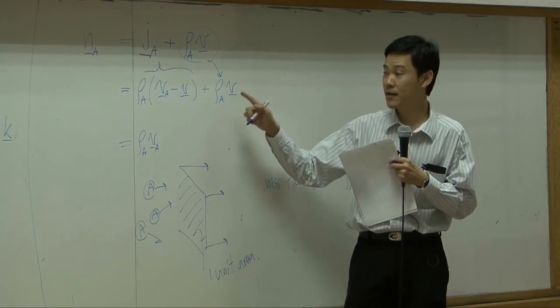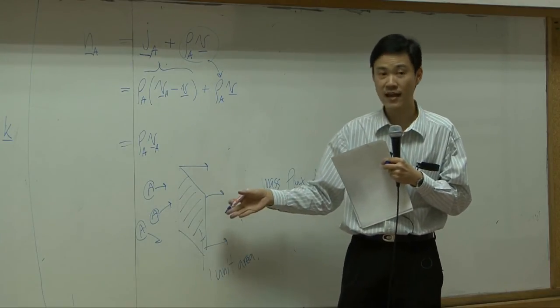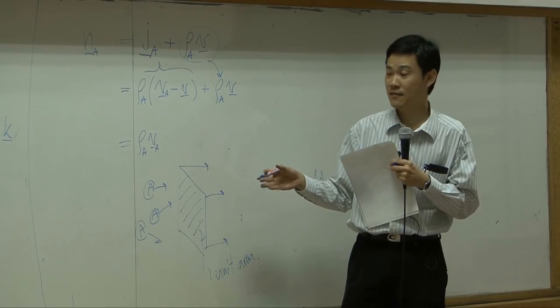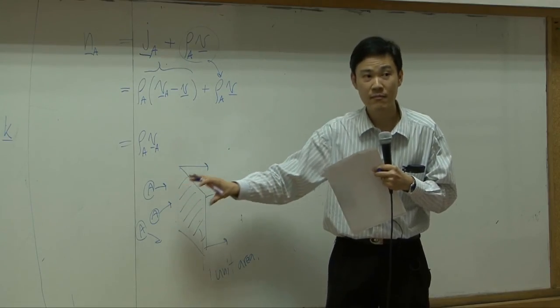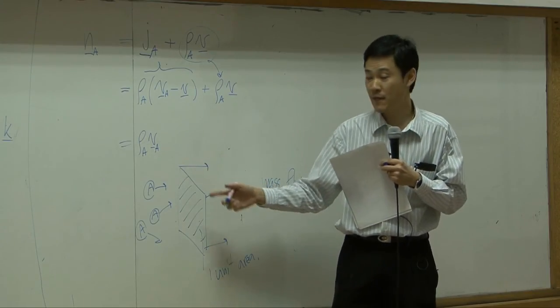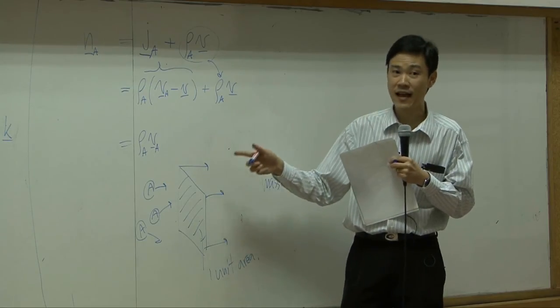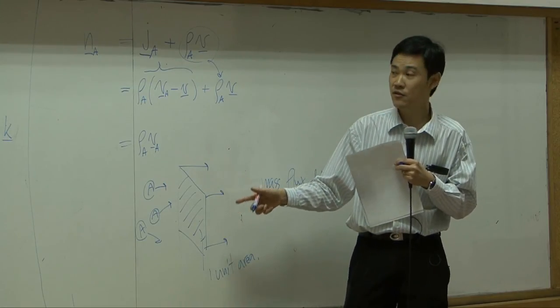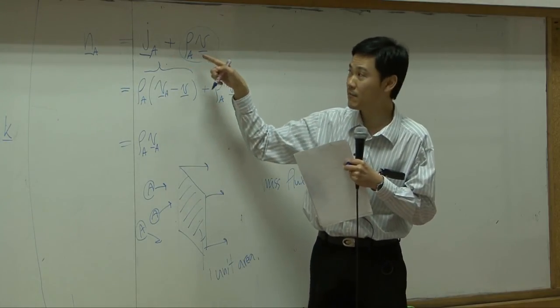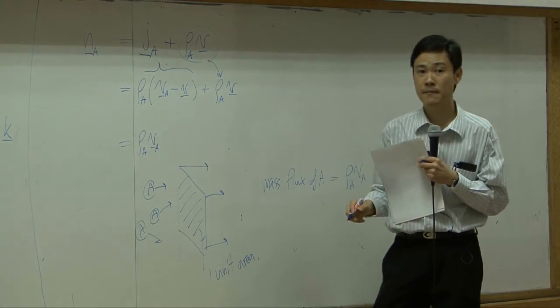On the other hand, if your molecules of A move quickly by itself, it can swim faster, you should expect more A to be counted. So by counting at stationary point like this, you are already taking account of both combine, I mean both convective flux and diffusion flux.